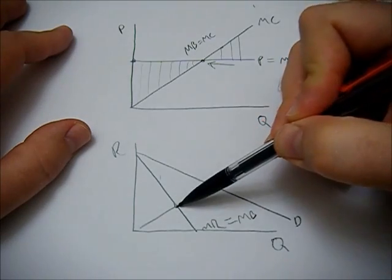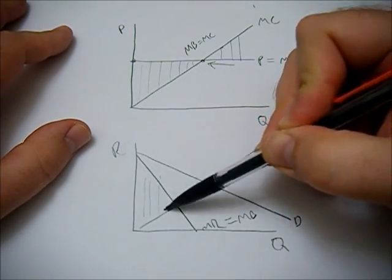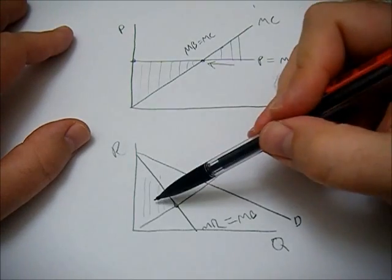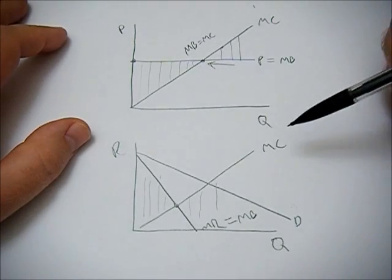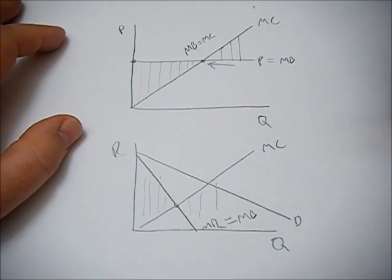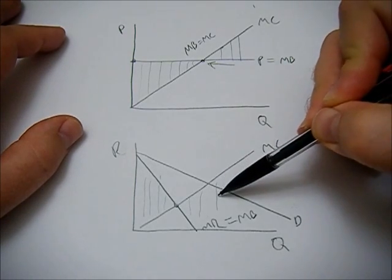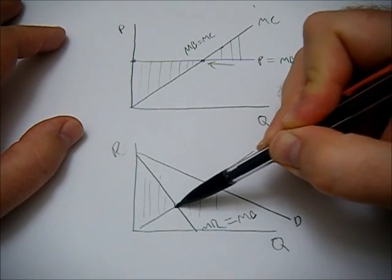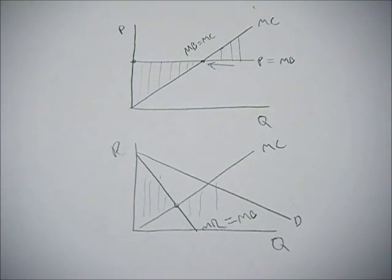If we're to the left of where marginal benefit equals marginal cost, we're leaving potential gains on the table and we could benefit by producing more. If we're to the right, then we're losing money or profit in those transactions, and we'd be better off by producing more. Until we get to this magical point where marginal benefit equals marginal cost.